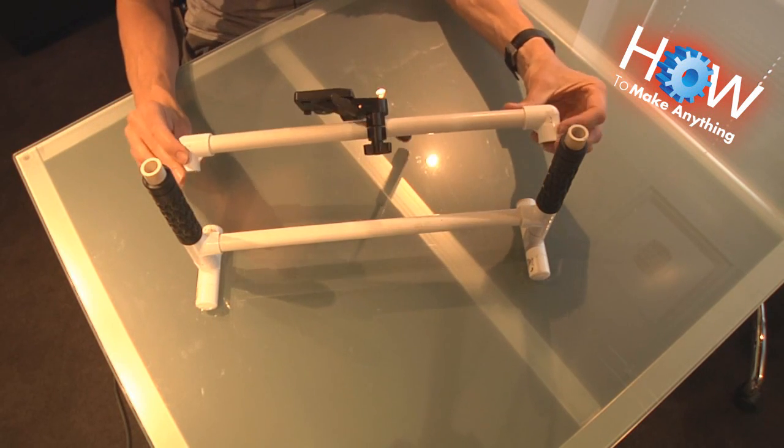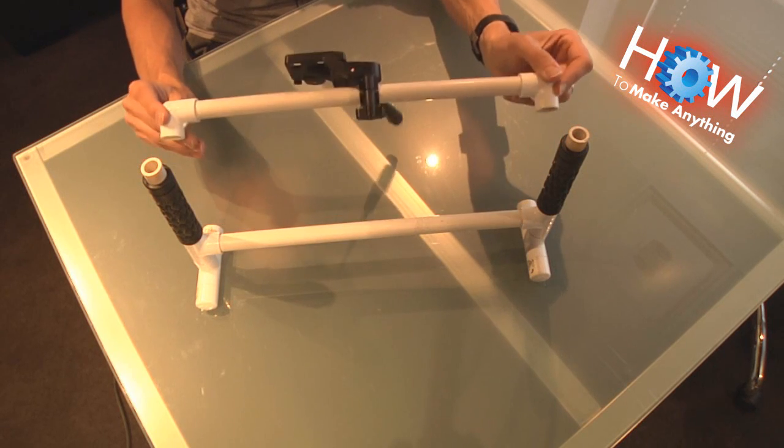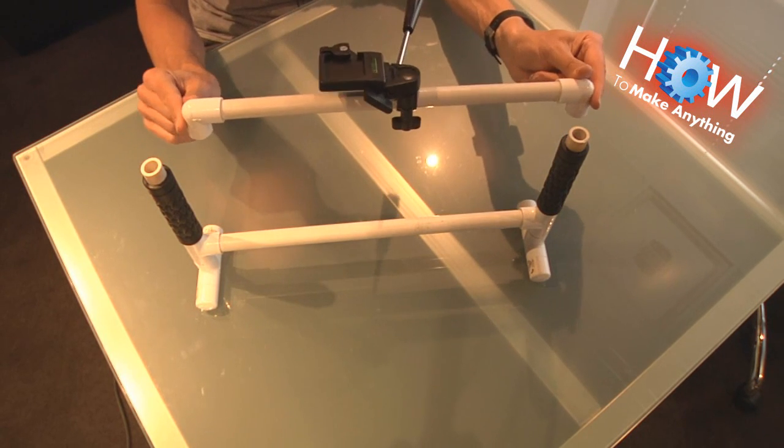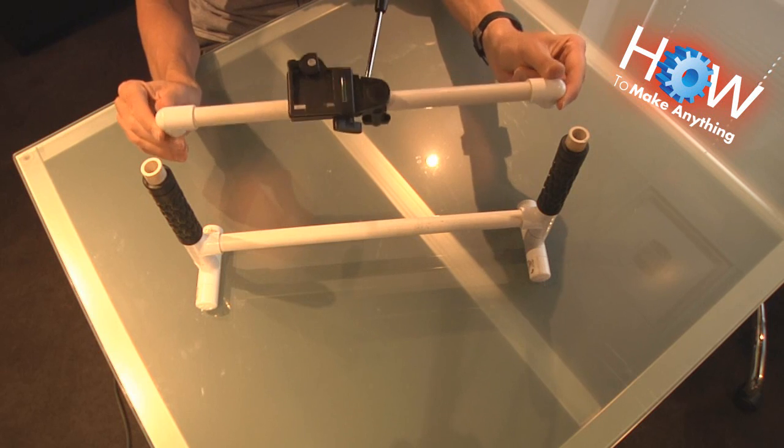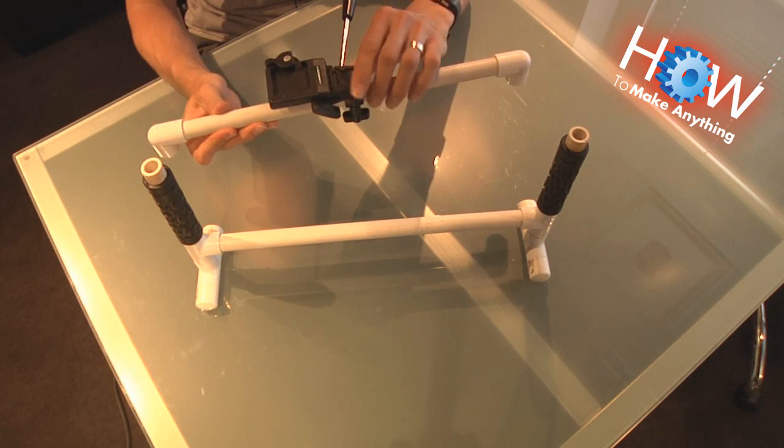Next is the top. This is created by an equal length of PVC pipe with two elbows on either end. Before you put the elbows on though, you're going to want to put your camera mount, which I got from an old tripod.